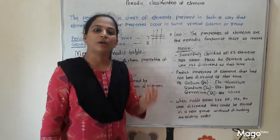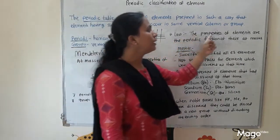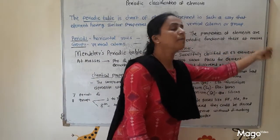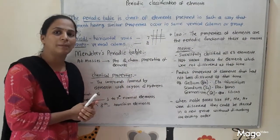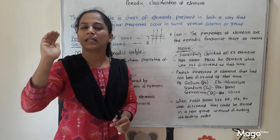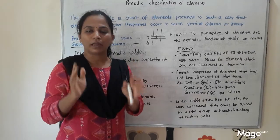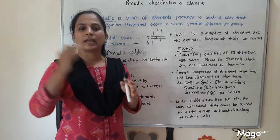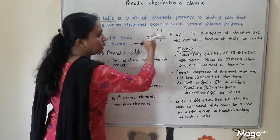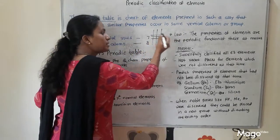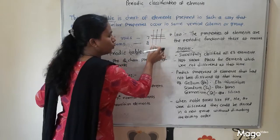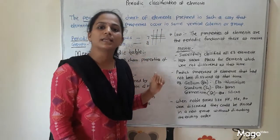Mendeleev's periodic law states that the properties of elements are a periodic function of their atomic mass — it is related to atomic mass only. Mendeleev arranged all elements present at that time in increasing order of atomic masses, taking care that elements having similar properties came directly under one another in the same group. For this purpose, he kept some vacant places in his periodic table.